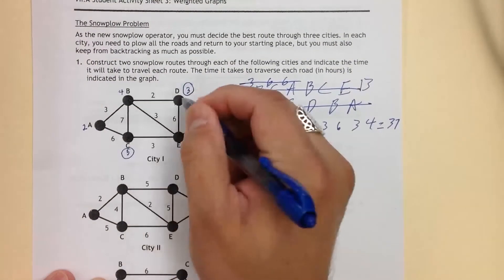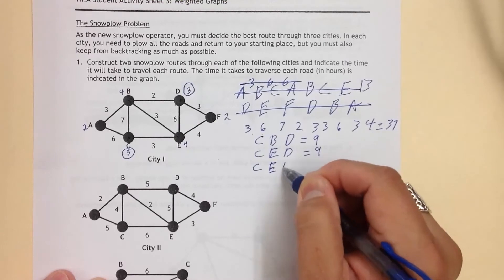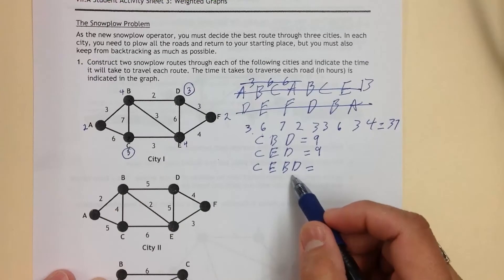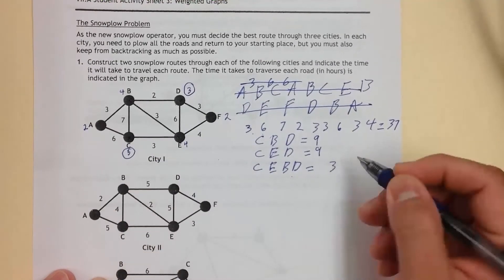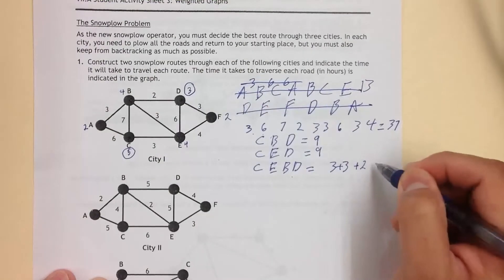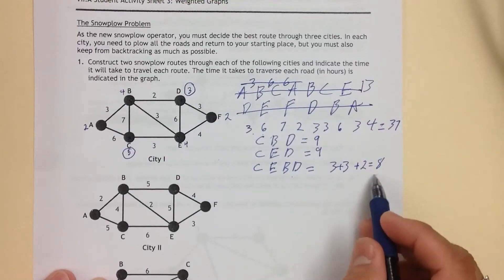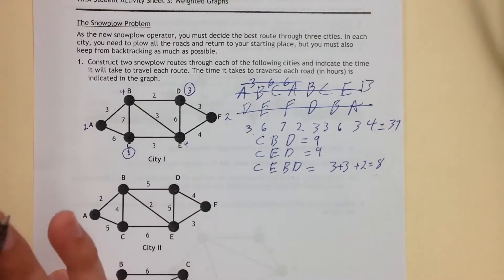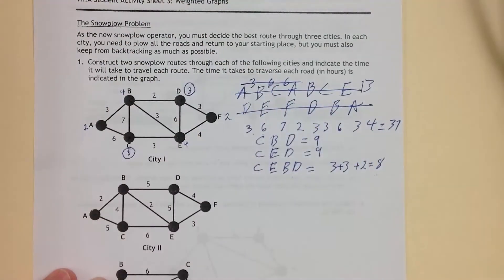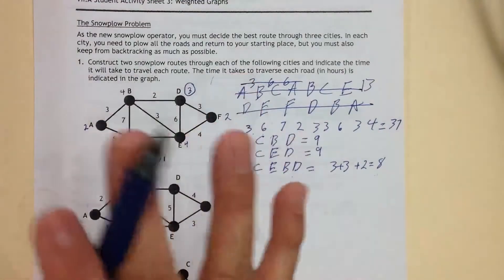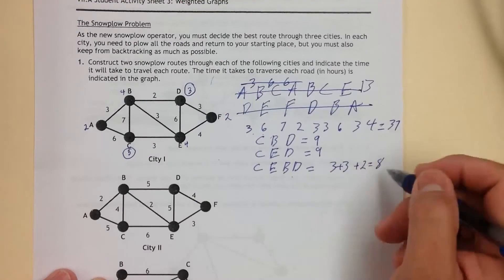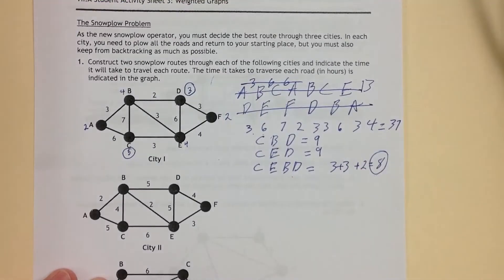Then we have C, E, B, D. So C, E, B, D. Let's see, what do we got right here? So this is three. This is also three. And then two. So that's a total of eight. This is the shortest path. We don't know the reasons why this would be the shortest path. But it's a little bit out of the way. It could be that this is a straight stretch or the terrain is really easy to travel. We don't know. It may have less traffic. It may have a whole bunch of stuff. But you know what? This is how it was determined. So this is the shortest path.